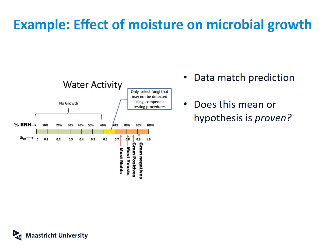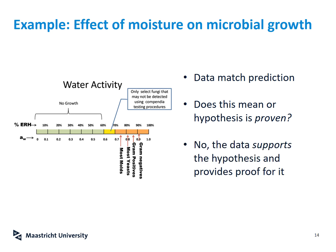You then analyze the results: your prediction was that moisture would influence microbial growth, and that higher water content would lead to more microbial growth. You check the data and indeed your prediction was correct — your data matched your prediction. Does that mean your hypothesis is proven? Not really. A hypothesis is never truly proven until it is factually disproven, but you build up evidence. The data support your hypothesis, and the more evidence you gather, the more likely it is that your hypothesis is actually true.